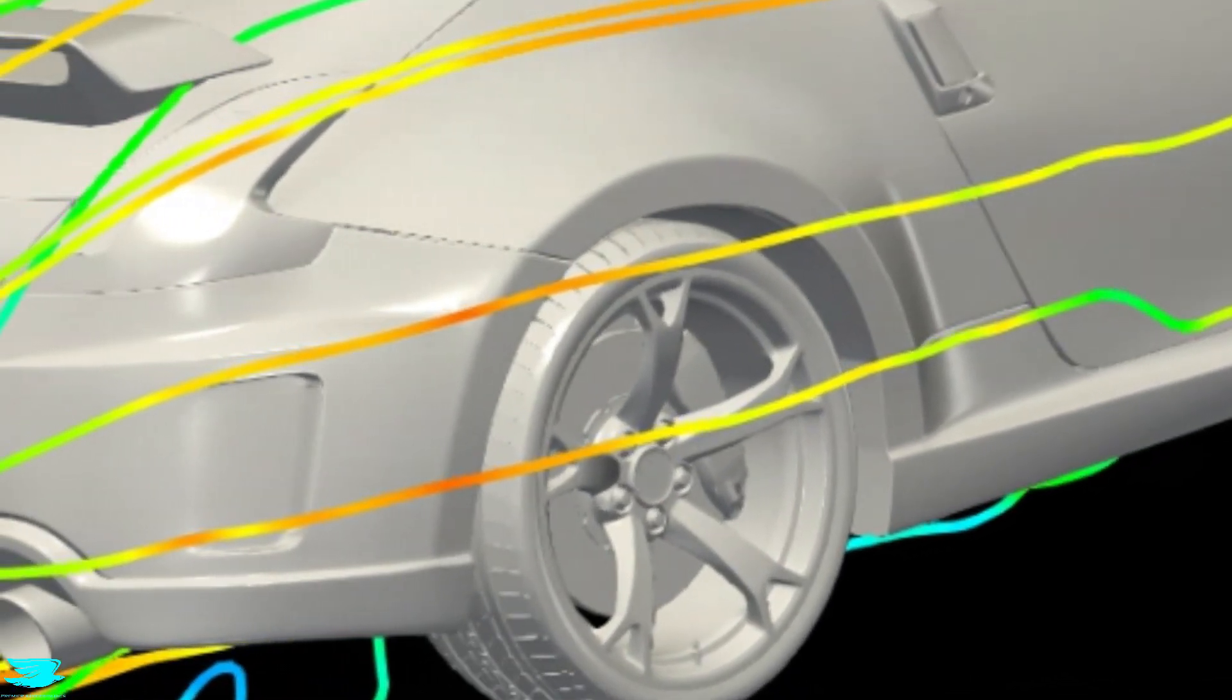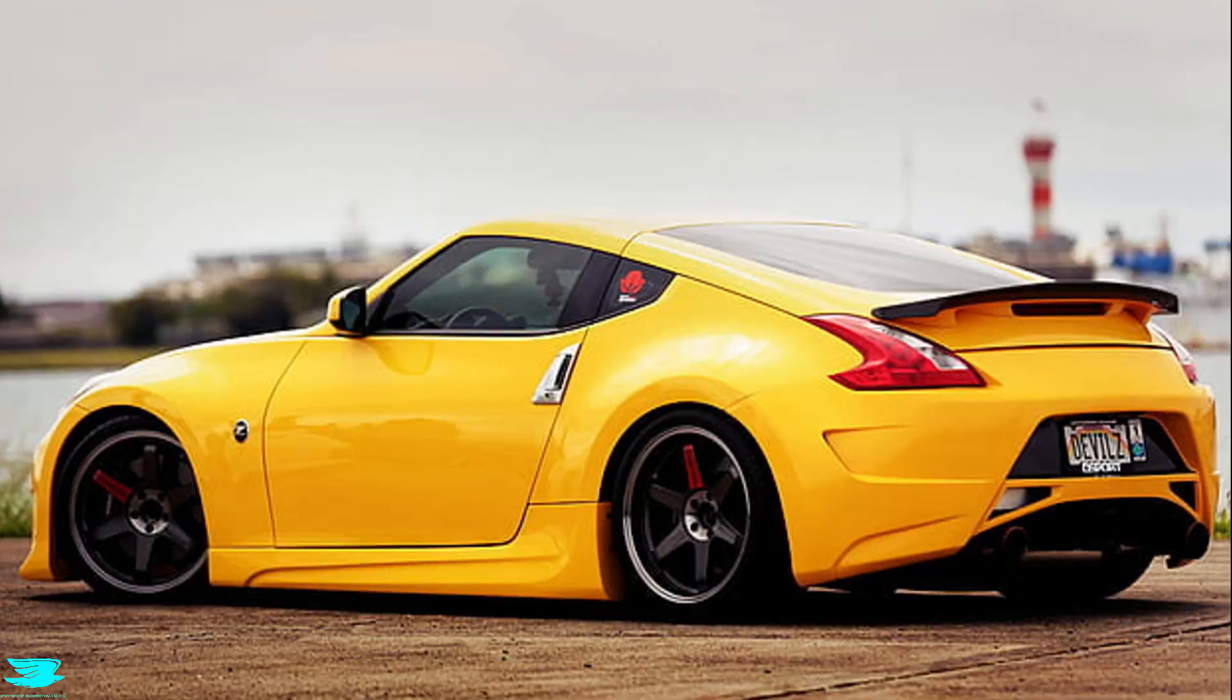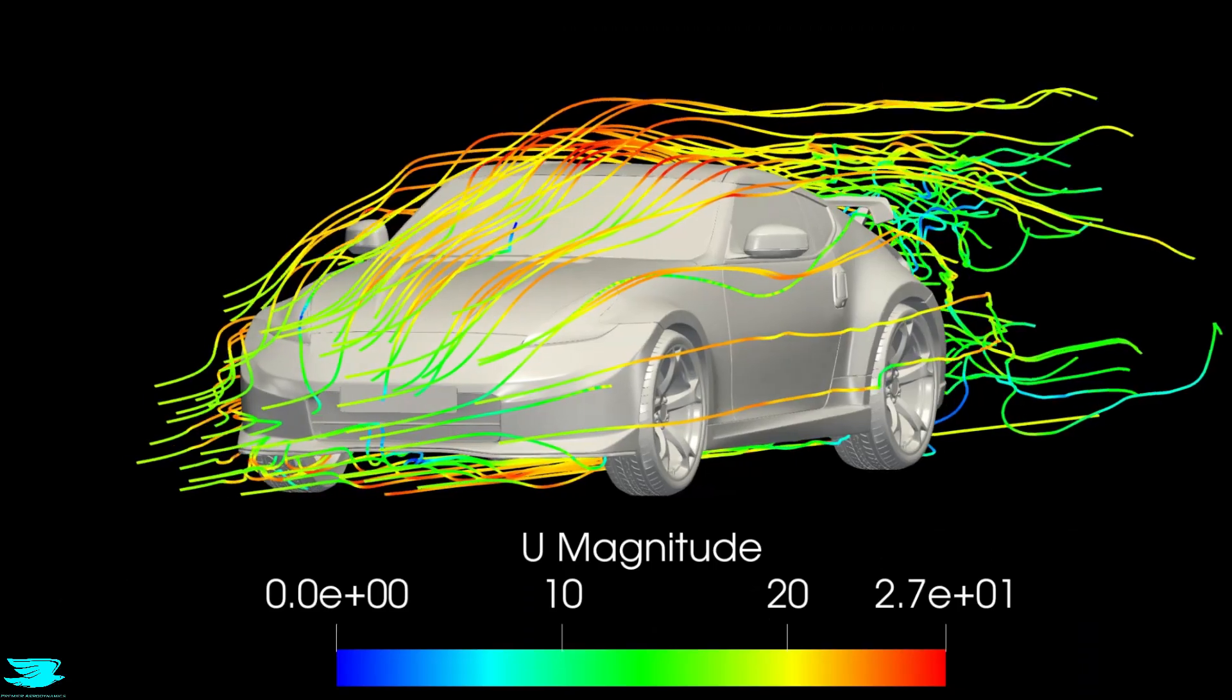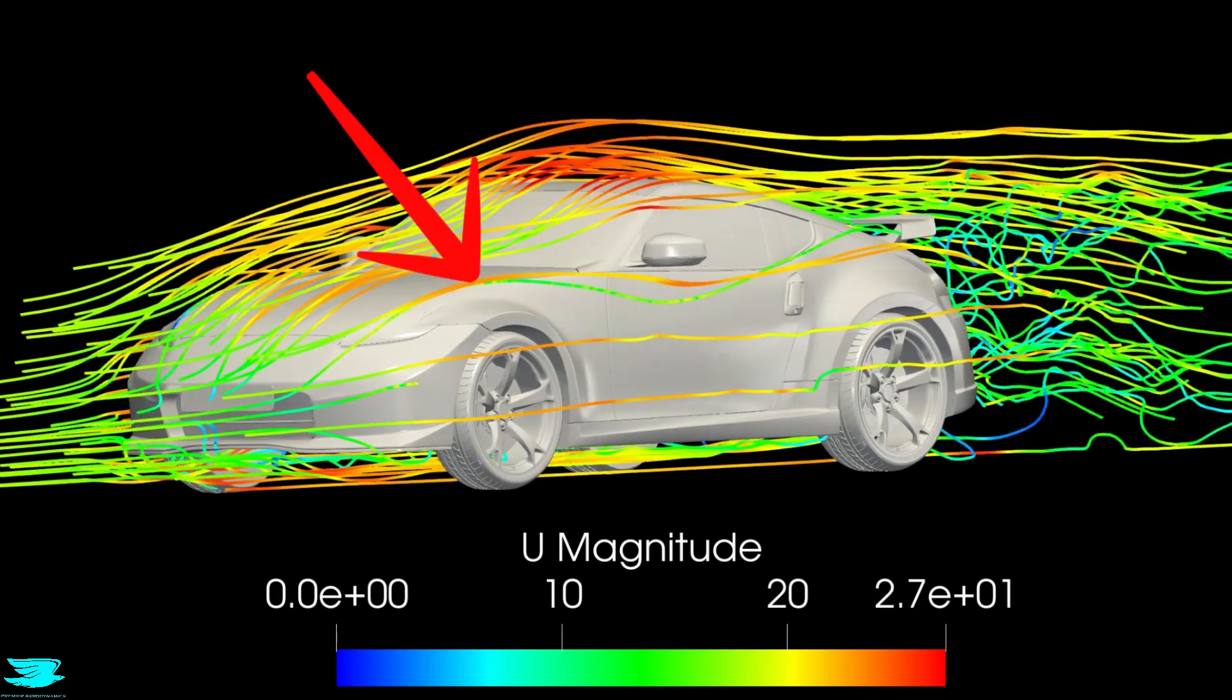This approach works well for cars like the 370Z which has very flared rear wheel arches. Another car that would suit it well is the Bentley Continental GT. Actually, from this angle the nose looks very much like the Subaru BRZ.